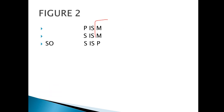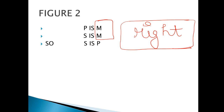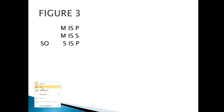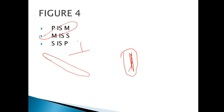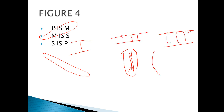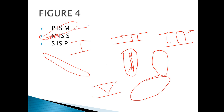Second figure mein woh right side par hona chahiye — abhi sirf revise karein, baad mein samajh lagegi. Third figure mein woh left side par hona chahiye. Aur last — fourth figure mein it should be like this. Toh humne dekha: first figure mein aisa honi chahiye, second figure mein right par straight, third figure mein left par straight, aur fourth figure is tareeqe se honi chahiye.